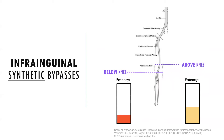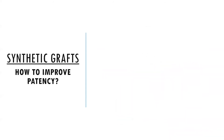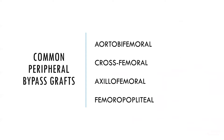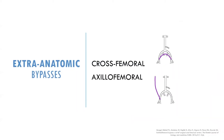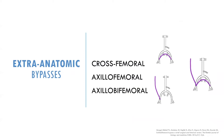Various methods have been developed to improve patency, such as modifying the distal anastomosis by inserting a vein cuff or patch, or using a graft coated with carbon, heparin, or other antithrombotic materials. Common peripheral bypass grafts include aortobifemoral, crossfemoral, axillofemoral or axillobifemoral, and femoropopliteal bypasses. Crossfemoral and axillofemoral grafts are considered extra-anatomic bypasses because they avoid the natural anatomic pathway of the arteries. A combination of these two bypasses is called an axillobifemoral bypass.